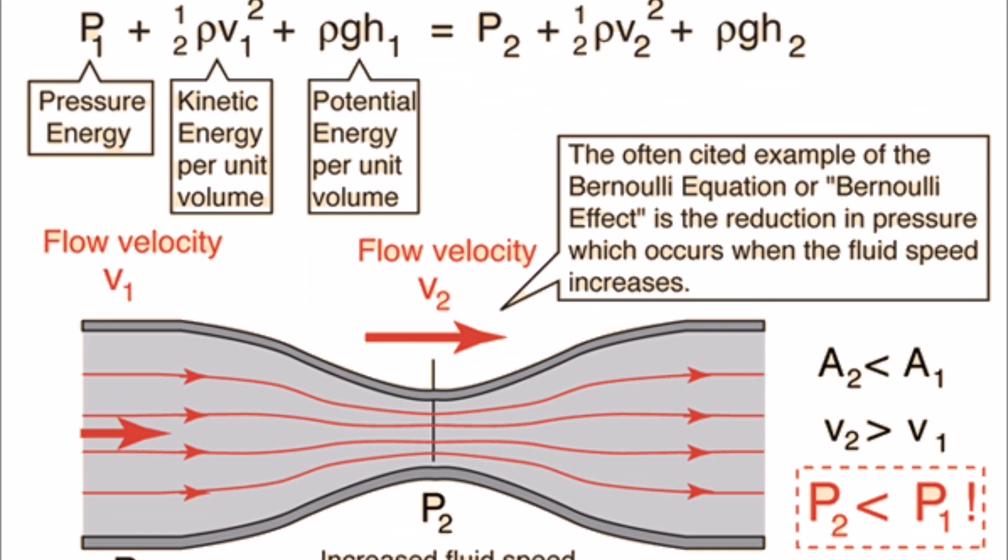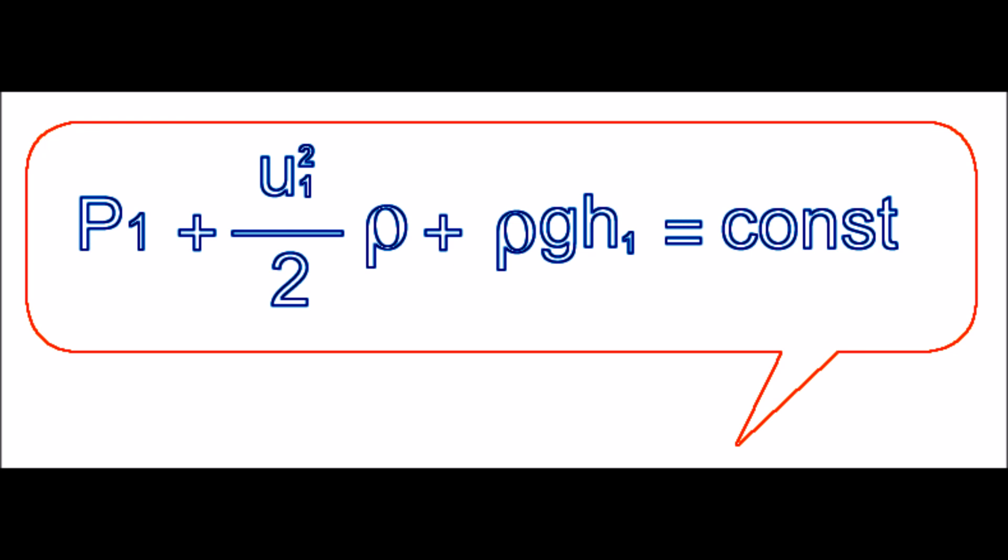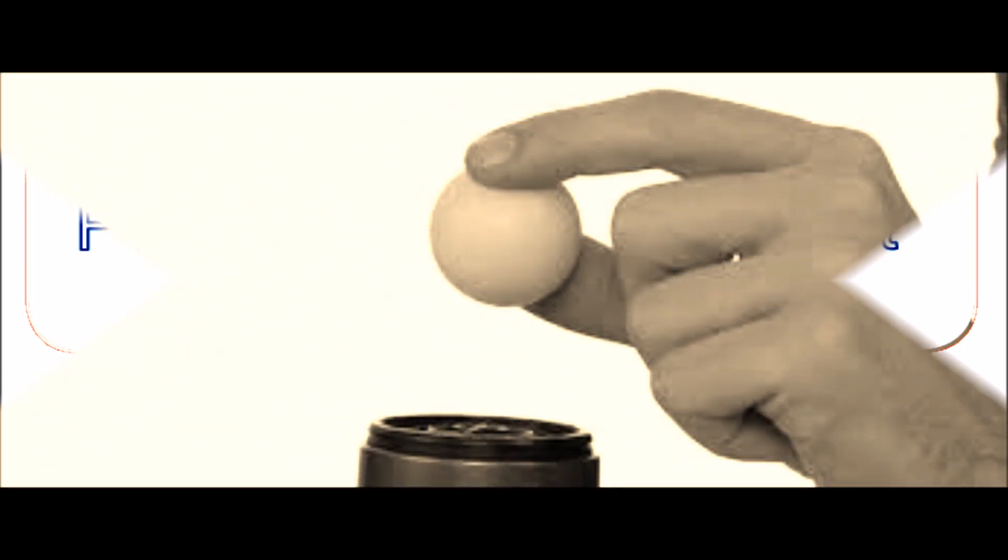Bernoulli's principle states that an increase in the speed of a fluid occurs simultaneously with a decrease in pressure or a decrease in the fluid's potential energy. In other words, the total pressure equals the static pressure due to the weight of the air above plus the dynamic pressure due to the motion of air.